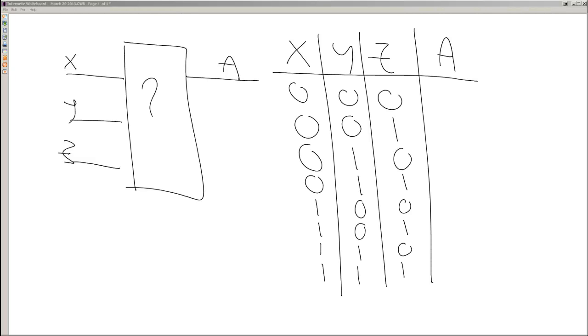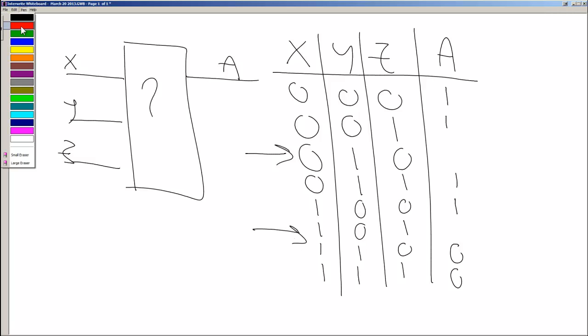And for our outputs sometimes, well for certain ones we want a particular output. But maybe for this combination and this combination of inputs, in this case 0 1 0 and 1 0 1, we don't really care what the output is.